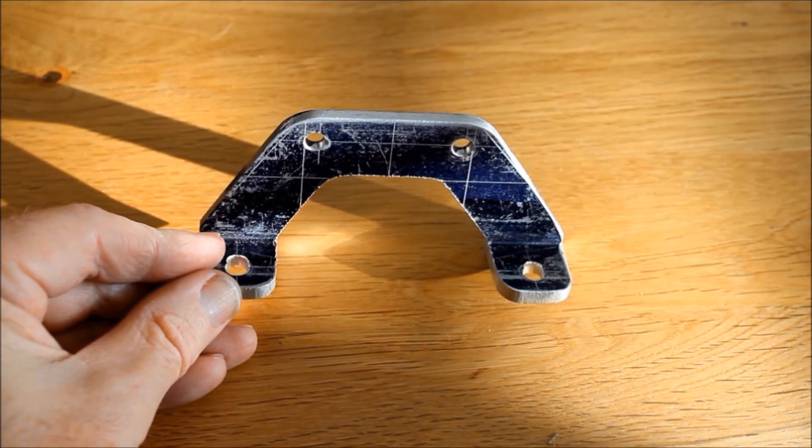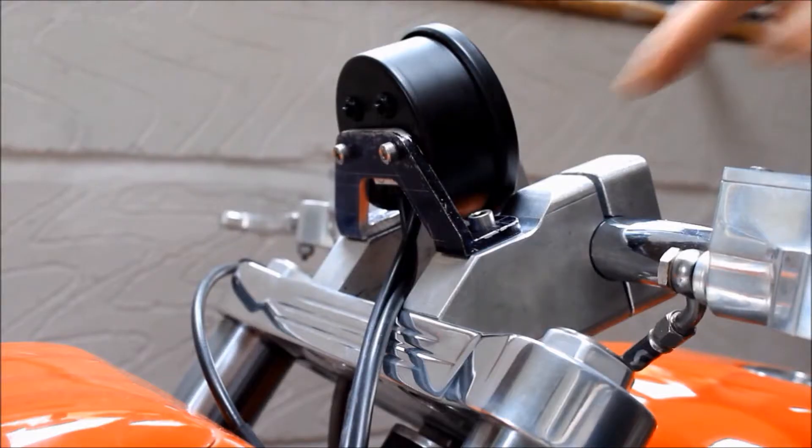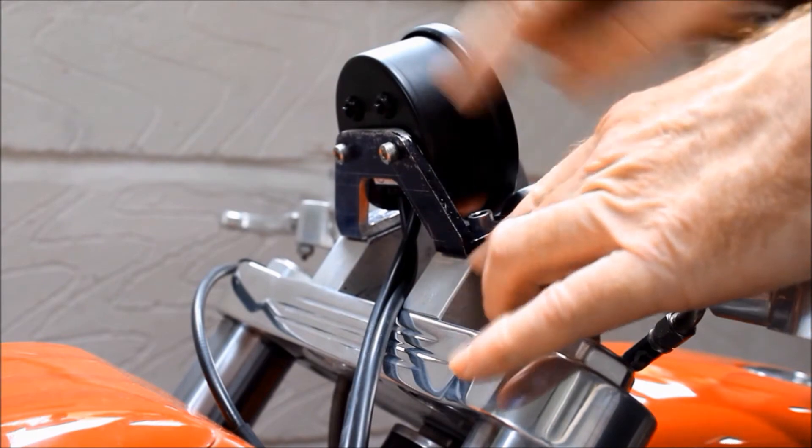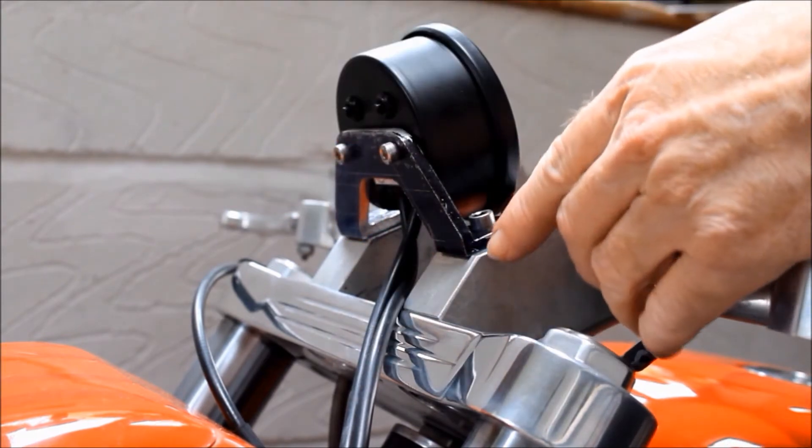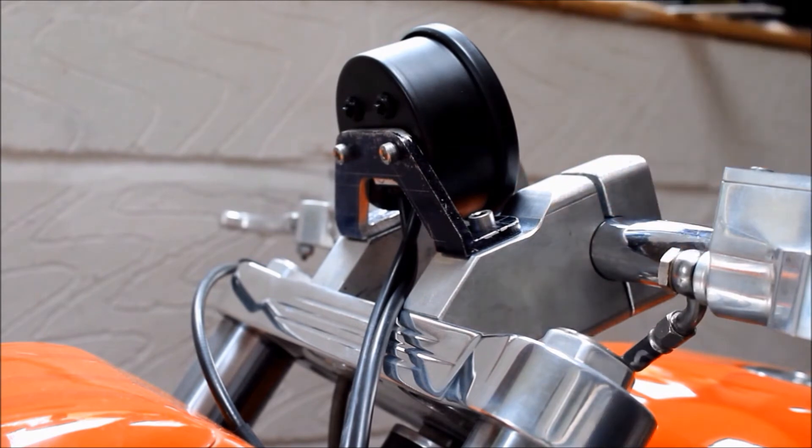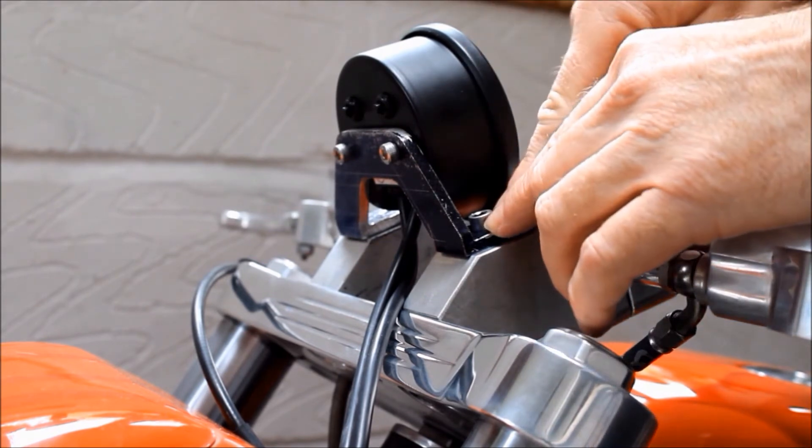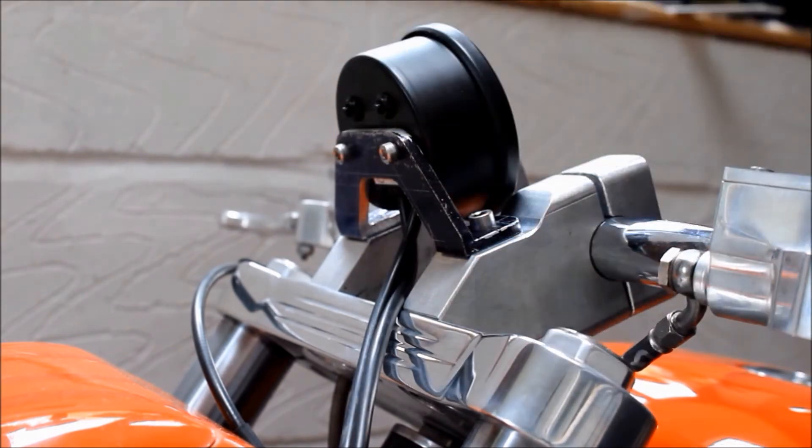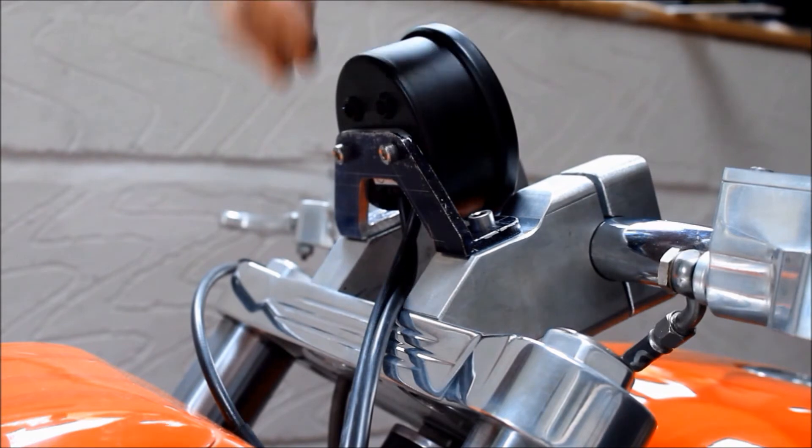And now here's that modified bracket back on the bike for another test fit. Looks okay, but these slotted holes need a bit more work because as you can see, hopefully, this edge of the bracket isn't quite yet aligned with the corner of the riser, only by about a millimeter, but that makes quite a big difference. So I've just got to file this down one more mill to widen the slot and then hopefully everything should look a lot better and be spot-on.